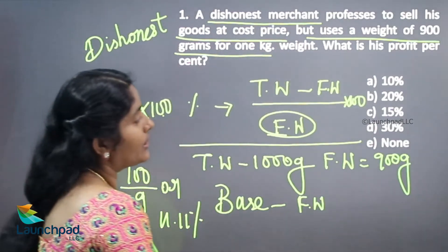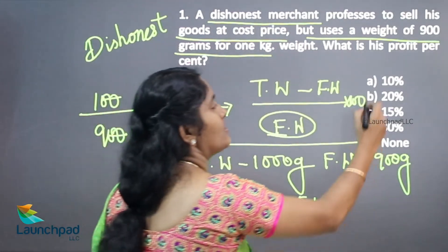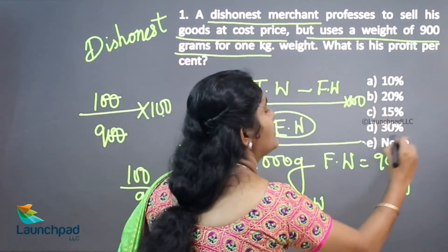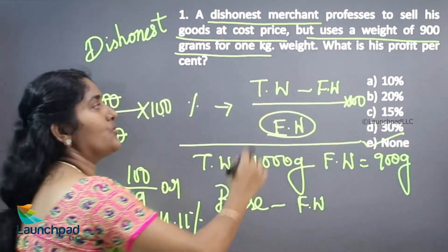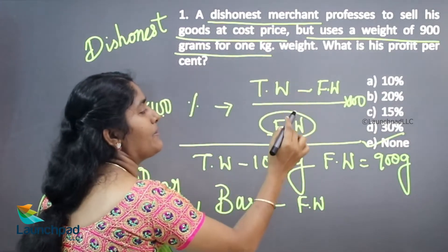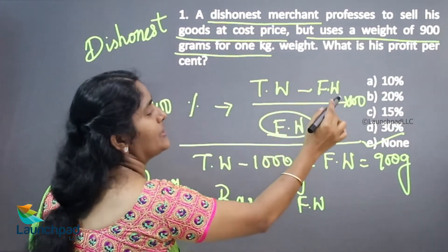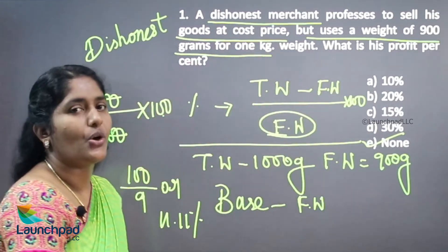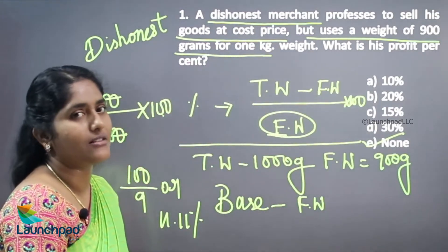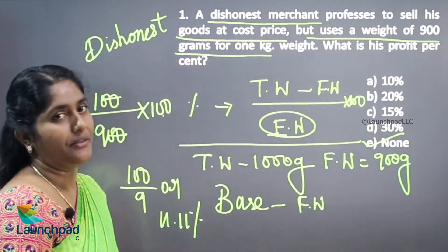So the answer is none of these. The formula is: true weight minus false weight, divided by false weight, into 100. This is the shortcut for this type of question.